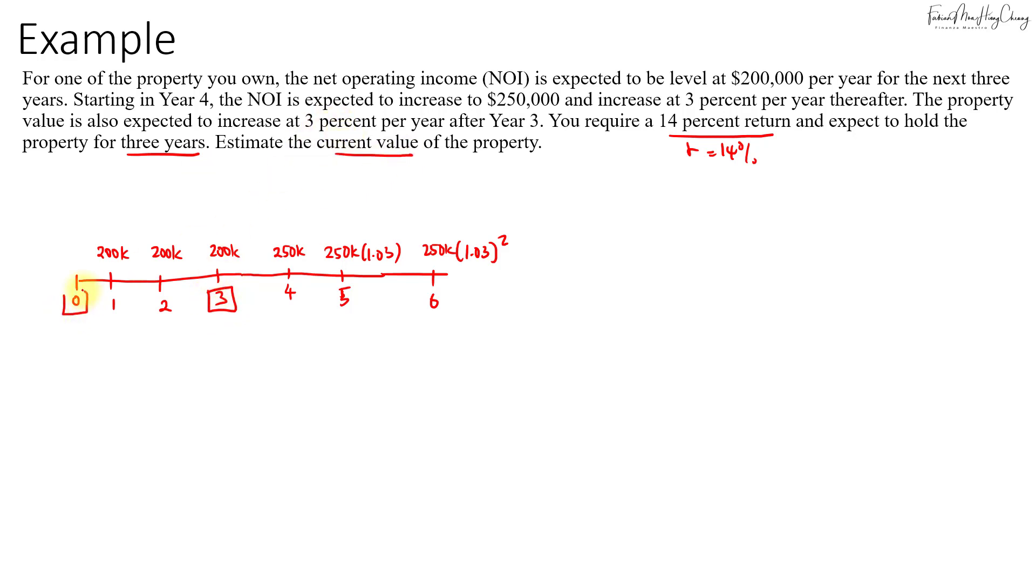All we need to do is find the PV of these cash flows. This goes on to perpetuity. First, I'm going to discount this cash flow here. I'm going to take the $250,000 and discount it back to year three using the direct cap method. The direct cap method for V3 will be the NOI in year four divided by the cap rate.